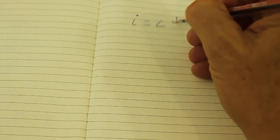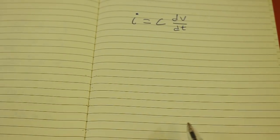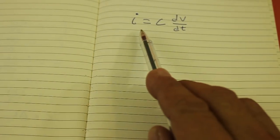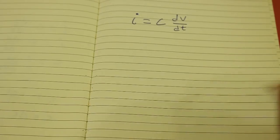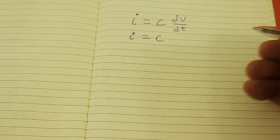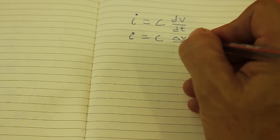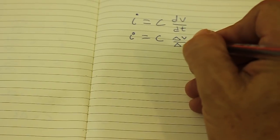We need a little bit of mathematics. Remember that current equals capacitance times the derivative of the voltage with respect to time. But if the current is constant, we can write this formula as capacitance times voltage interval divided by time interval.